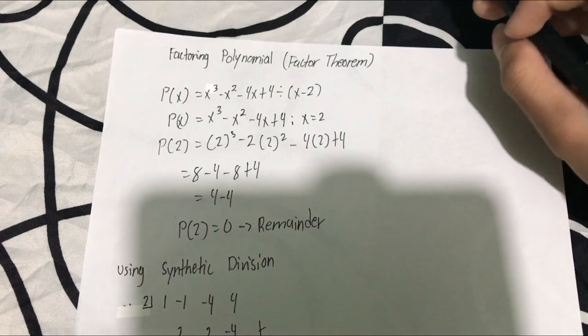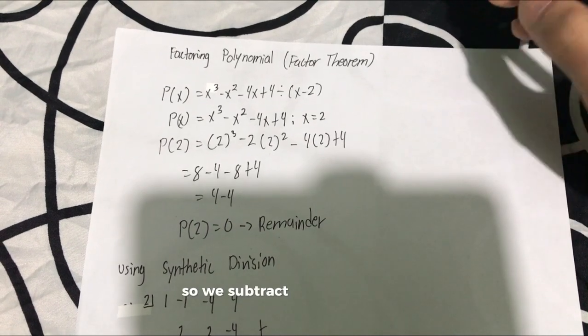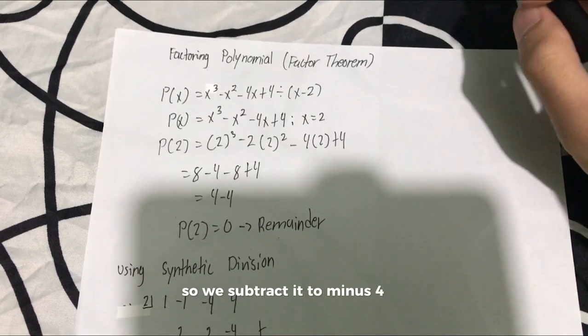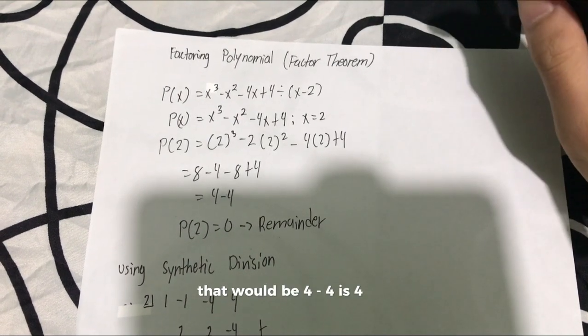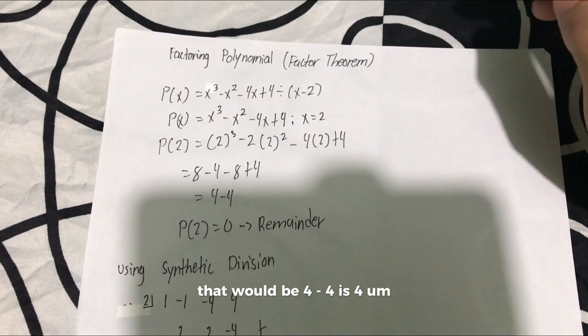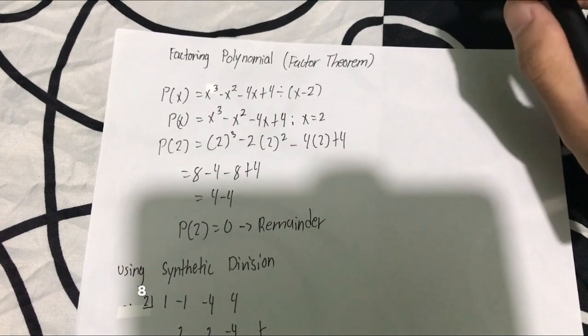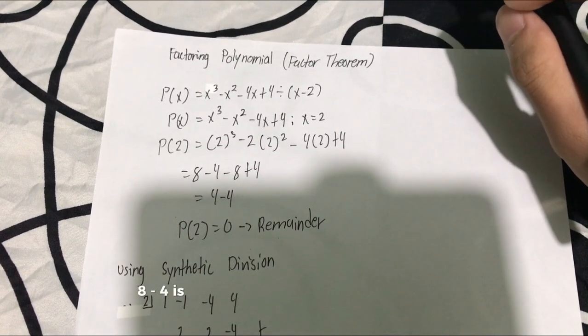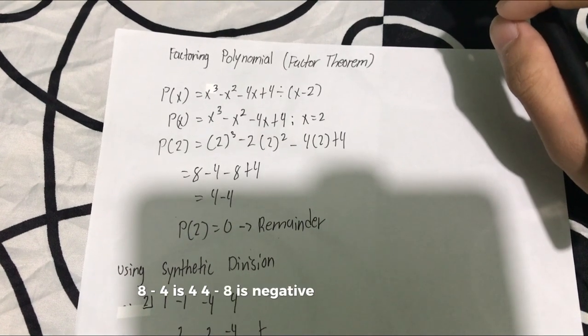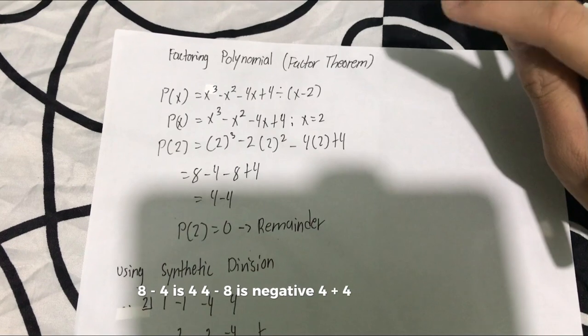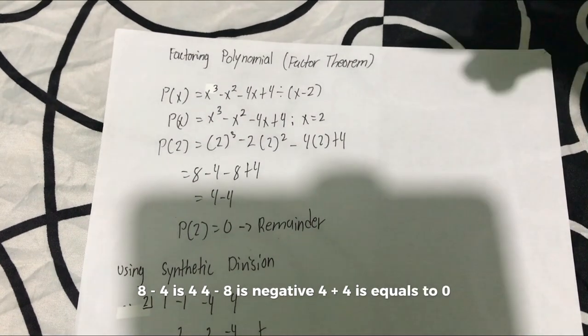So we use PEMDAS. We subtract: 8 minus 4 is 4, 4 minus 8 is negative 4, plus 4 equals 0.